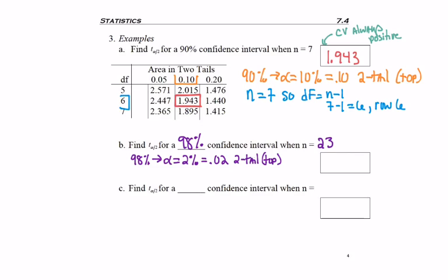n is 23, so I want to go to row 22. And if you look on your table, at 0.02, two tail on the top, row 22, hopefully you're seeing 2.508, again, leaving it positive.